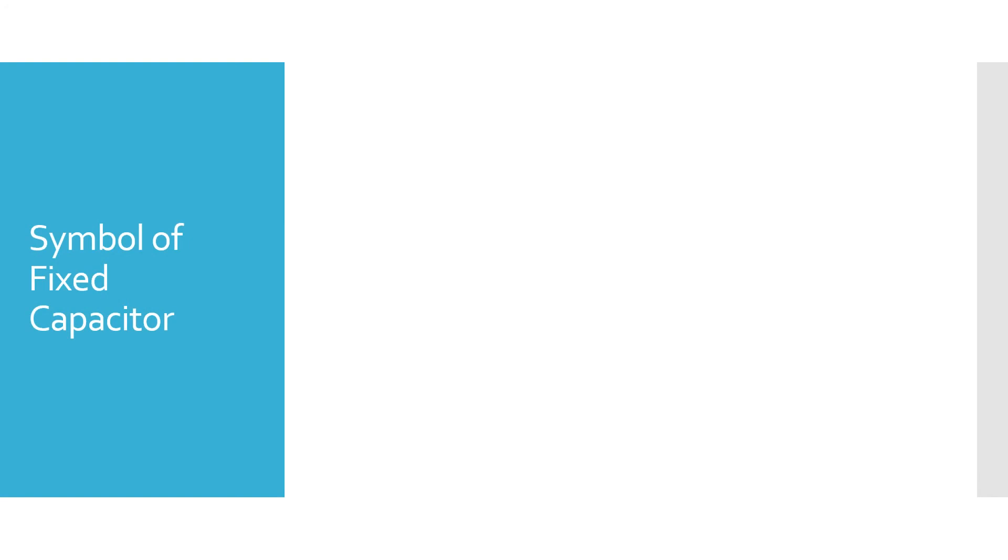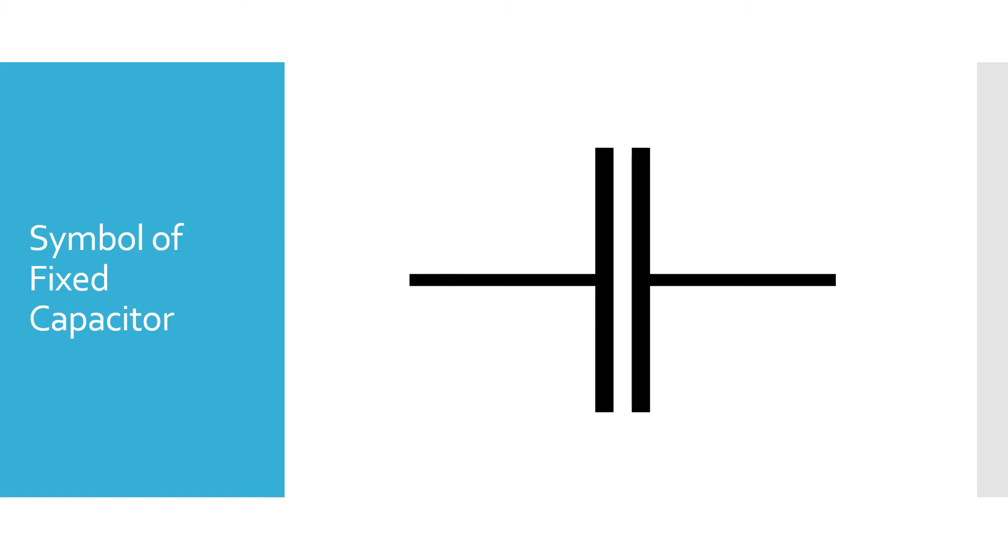Now let's see the symbol of a fixed capacitor. This is the symbol of fixed capacitor. There are two horizontal lines and two vertical lines, and between those two lines there is a little bit gap.